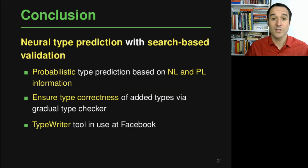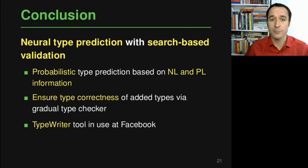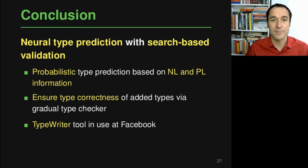In conclusion, I've presented TypeWriter — the first neural type prediction approach that uses search-based validation, combining a neural type prediction model with a gradual type checker to ensure every annotated type yields a type-correct program. TypeWriter is being used at Facebook right now and has already annotated thousands of otherwise missing types. Thank you very much for listening; feel free to ask questions at the FSE Q&A session or email the authors.